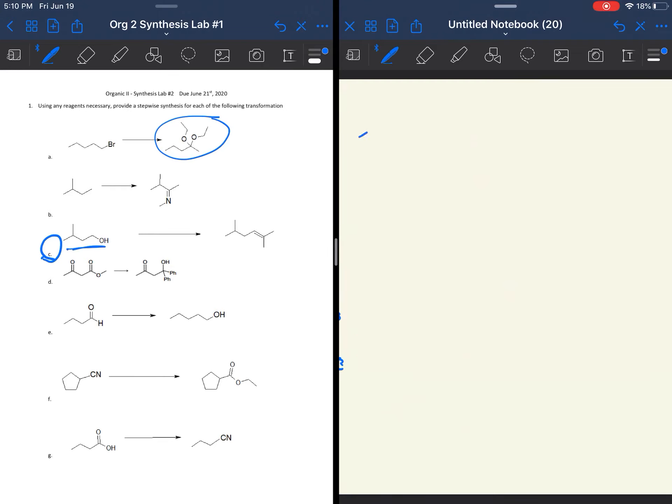So if you are having a hard time with retrosynthesis, you can always start from the front. So I'm starting with this alcohol and it has one, two, three, four, five carbons. I'm going to just look at the main chain here. One, two, three, four. And the product has one, two, three, four, five, six. So in total, we go from five carbons to eight carbons. So we are extending the carbon chain.